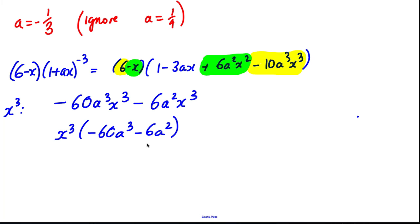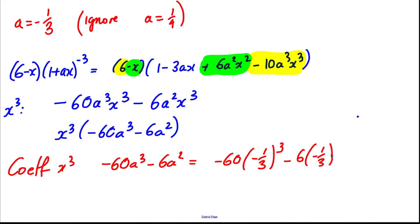Now we know A is negative a third. So therefore the coefficient of x cubed is equal to negative 60A cubed minus 6A squared. So this is just a case of typing in our calculator here.